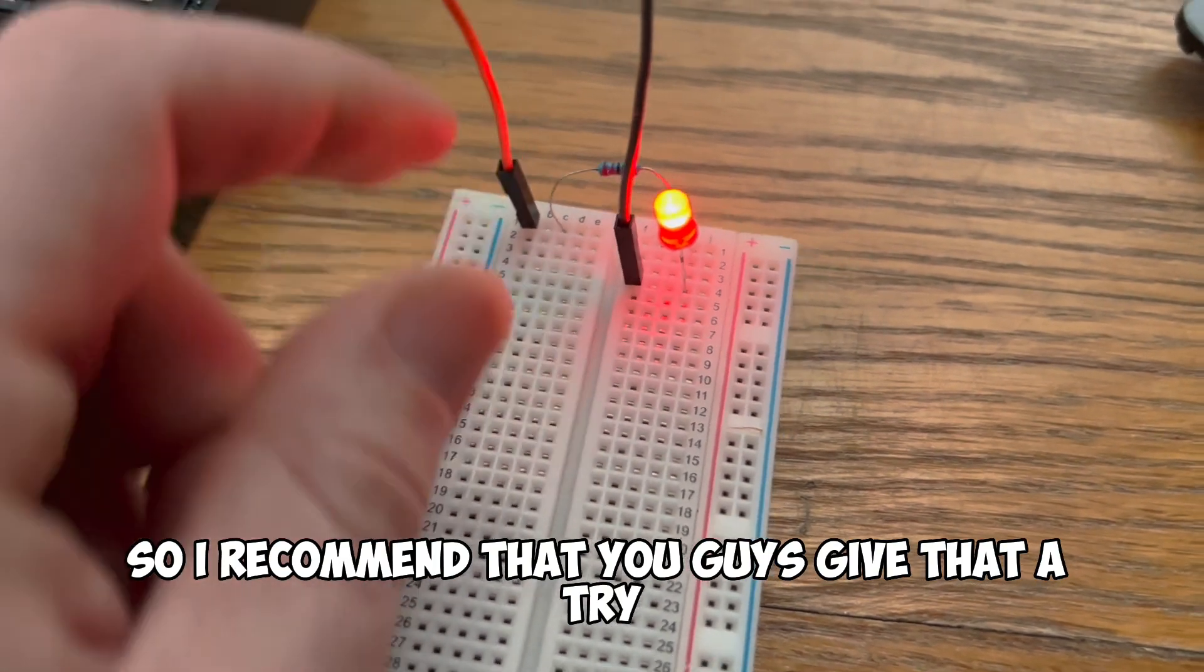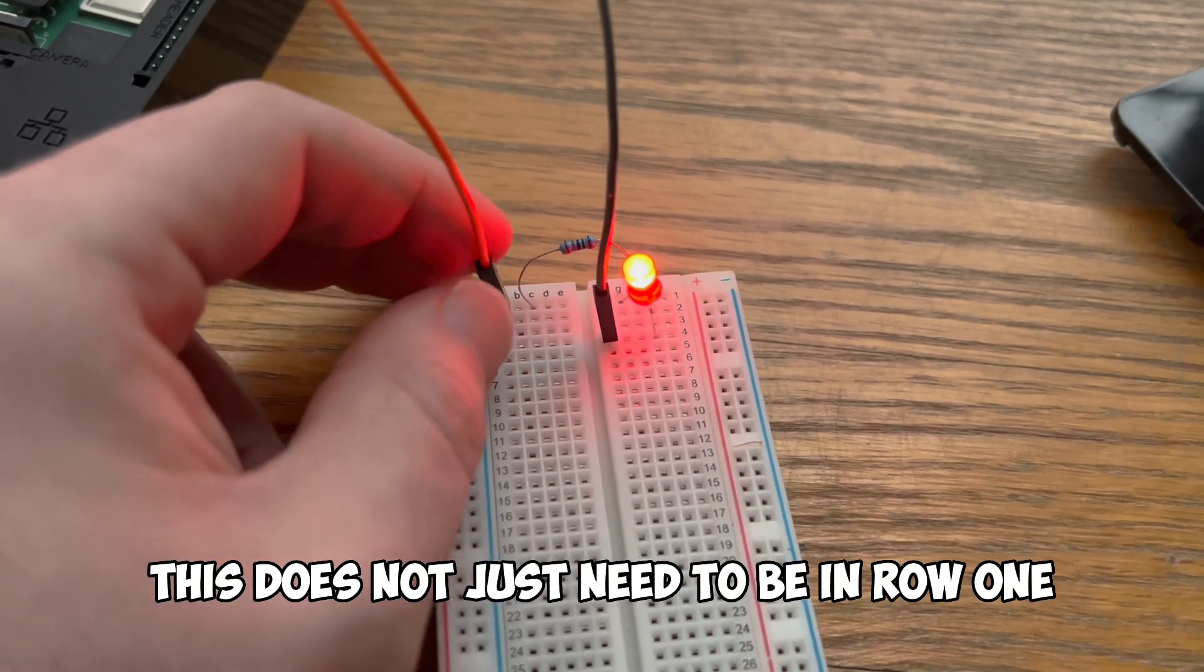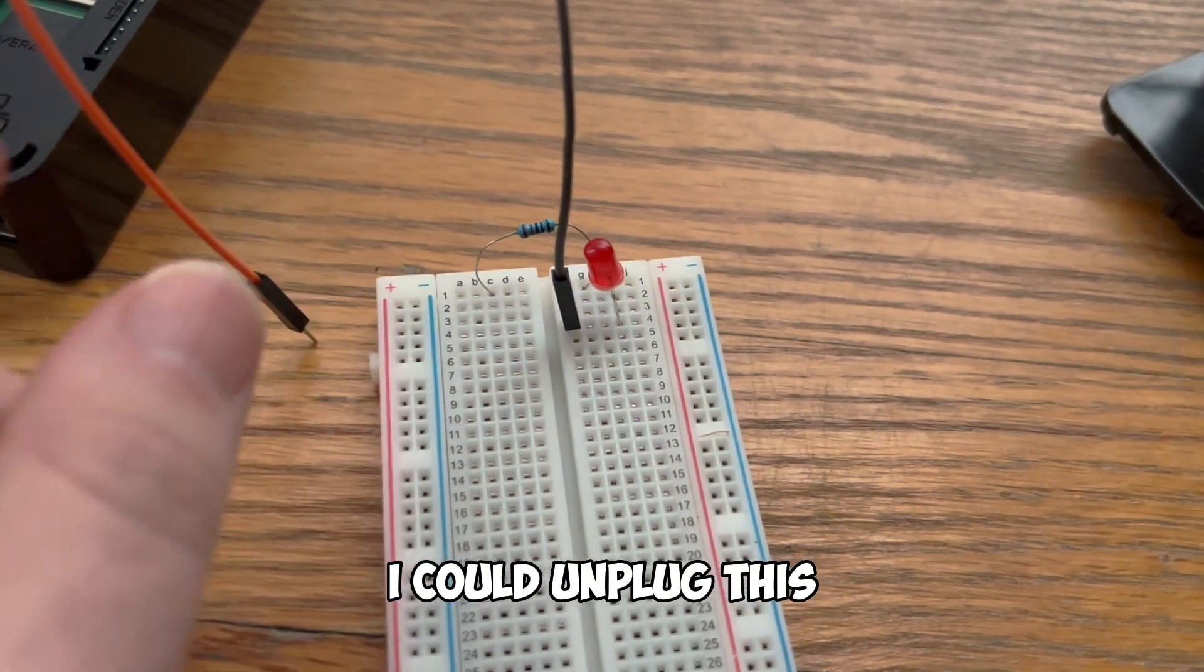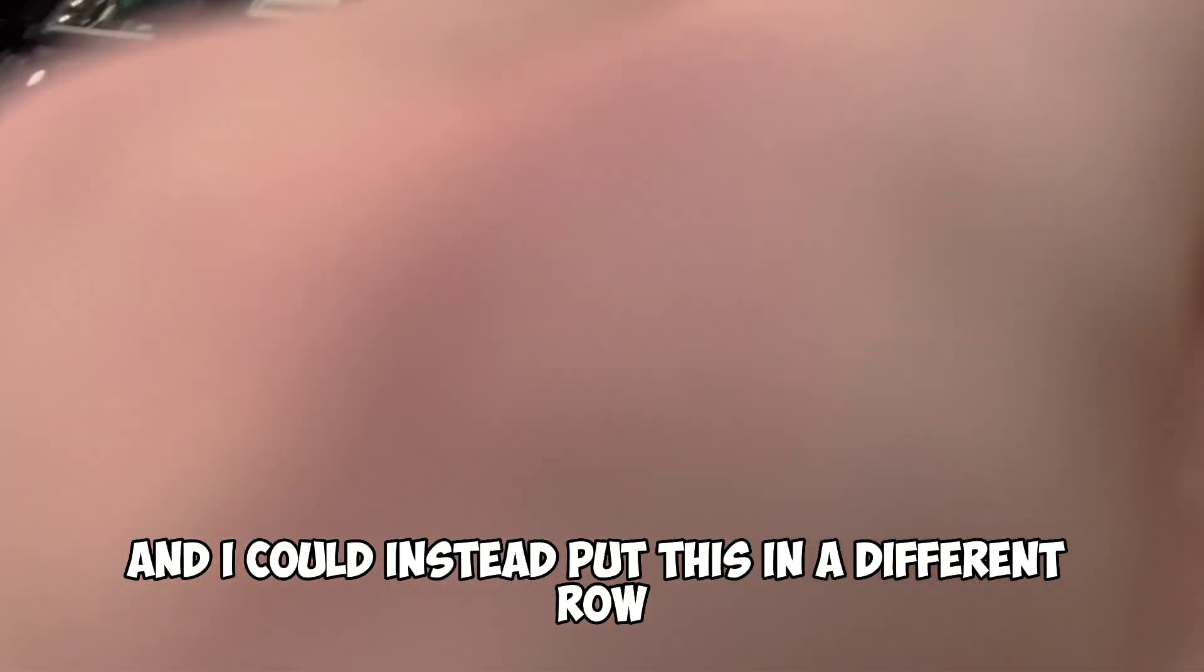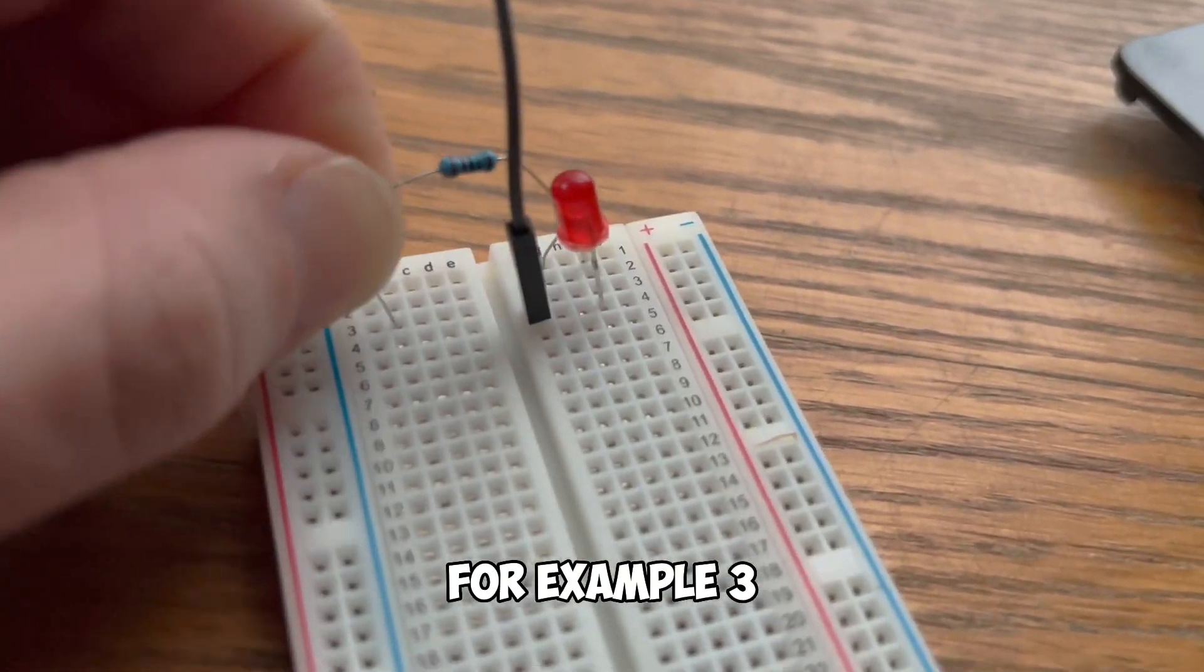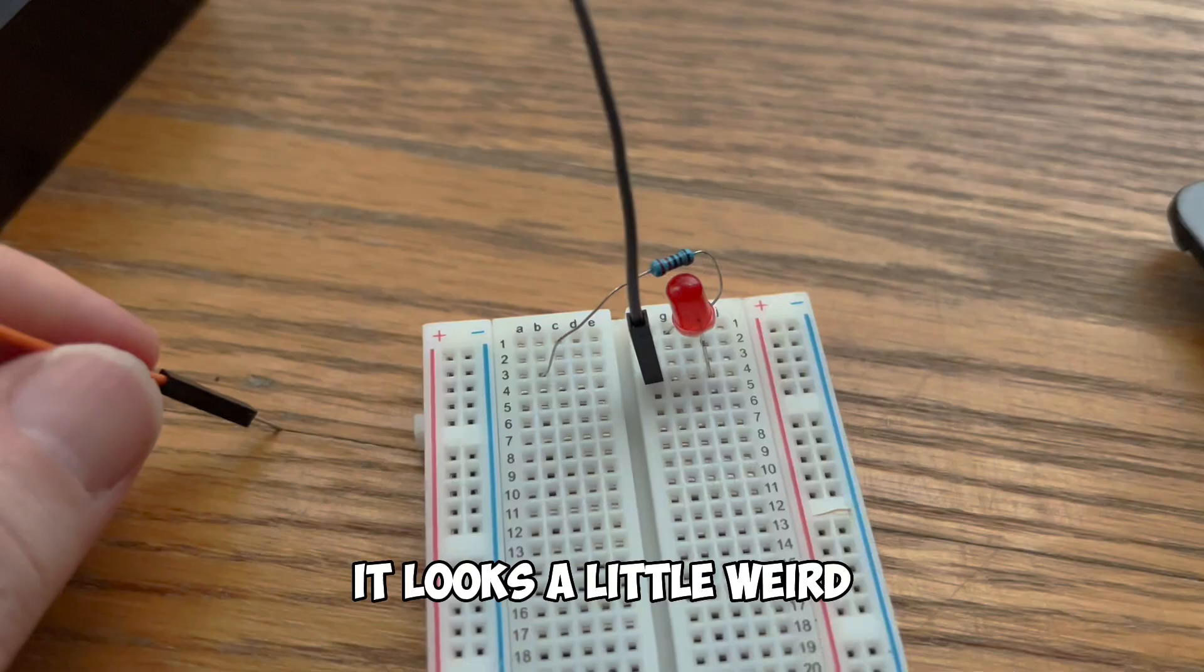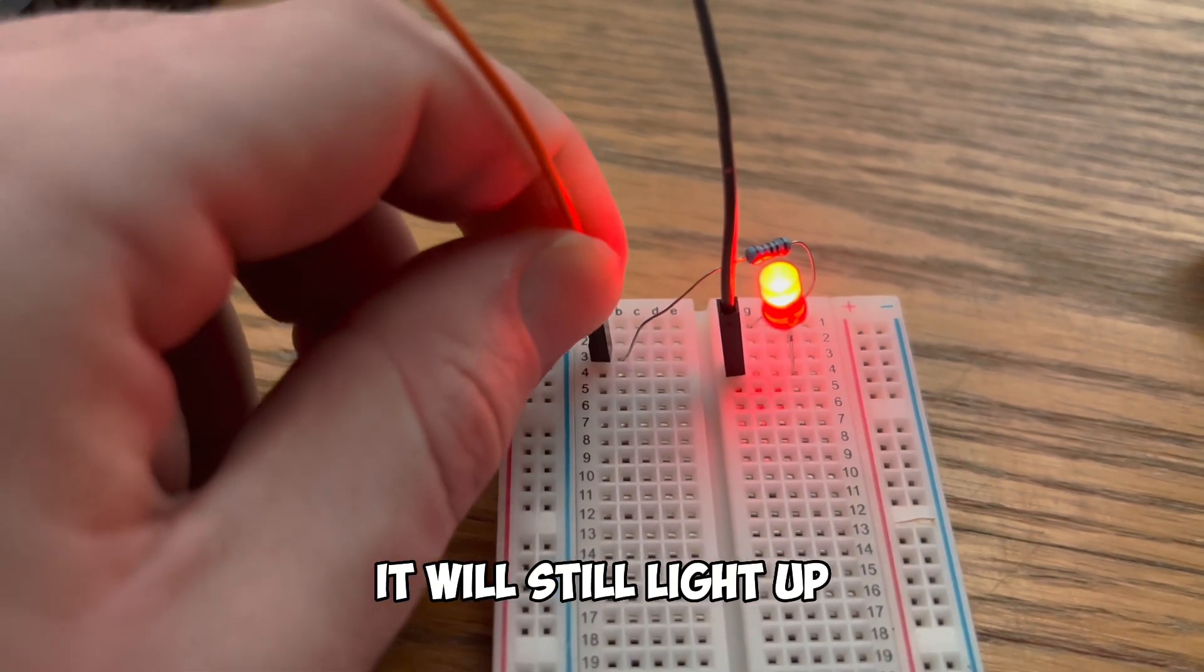So I recommend that you guys give that a try to see it light up and turn off. And as promised this does not just need to be in row one. I could unplug this and I could take this resistor and I could instead put this in a different row. So if I place this in row for example 3 having changed nothing else. It looks a little weird but as long as I put this back in to row 3 it will still light up.